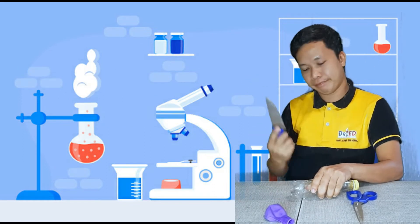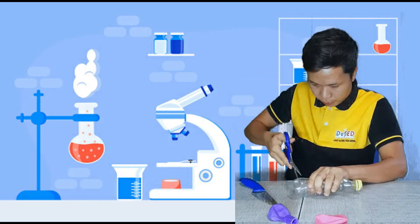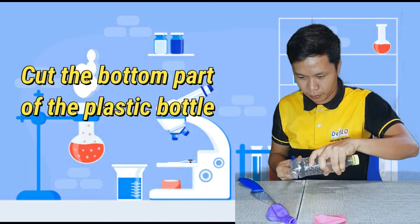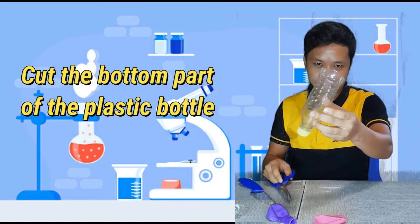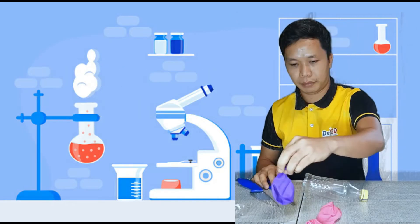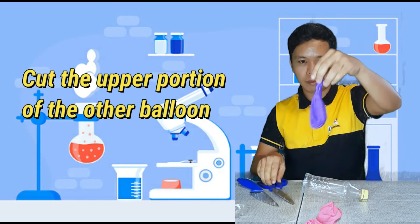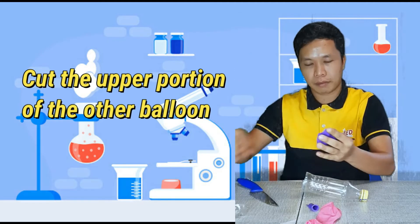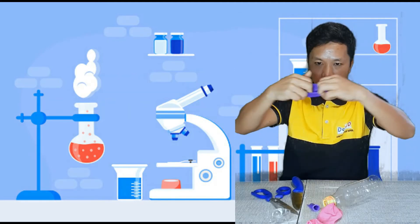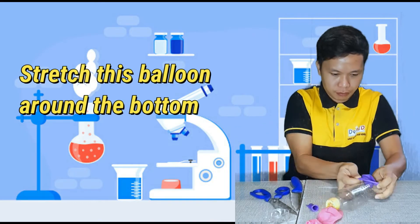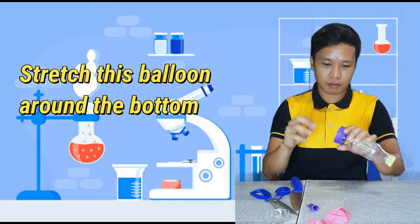The first thing that we're gonna do is cut the bottom part of the plastic bottle. Then, we need to cut the upper part of the other balloon like this. Then, stretch this balloon around the bottom of the plastic bottle just like this.